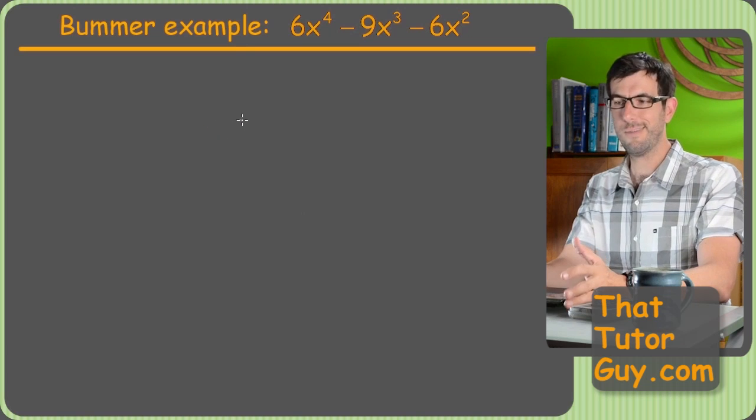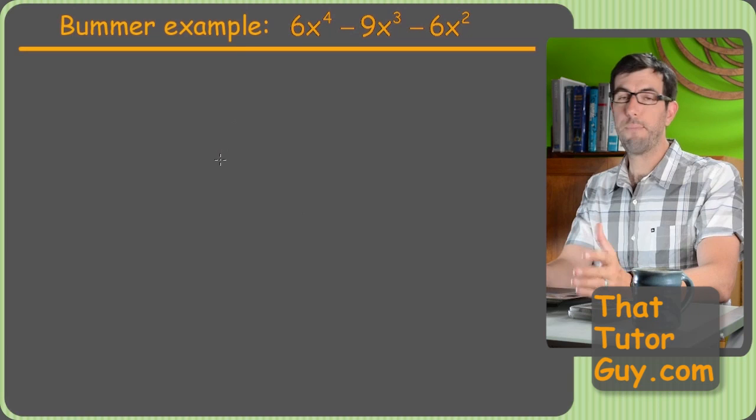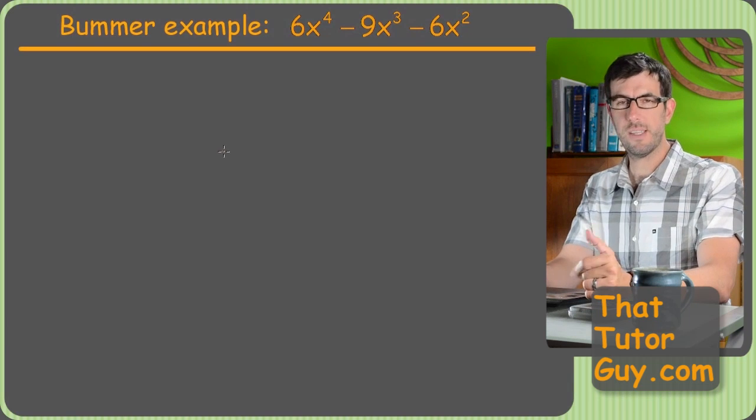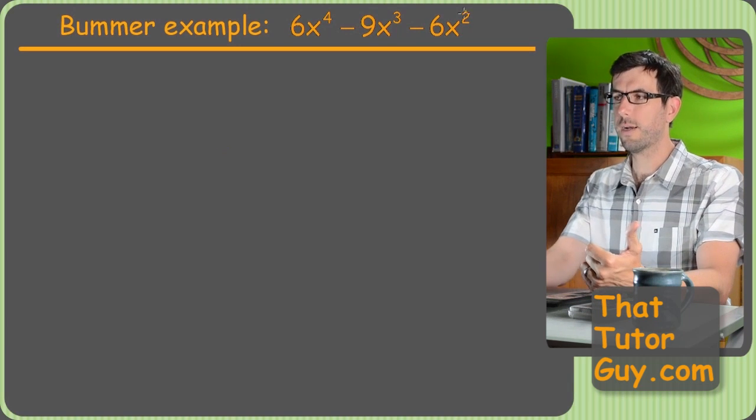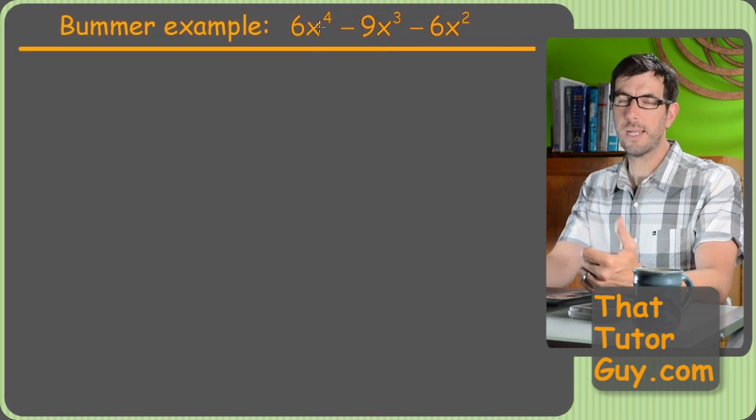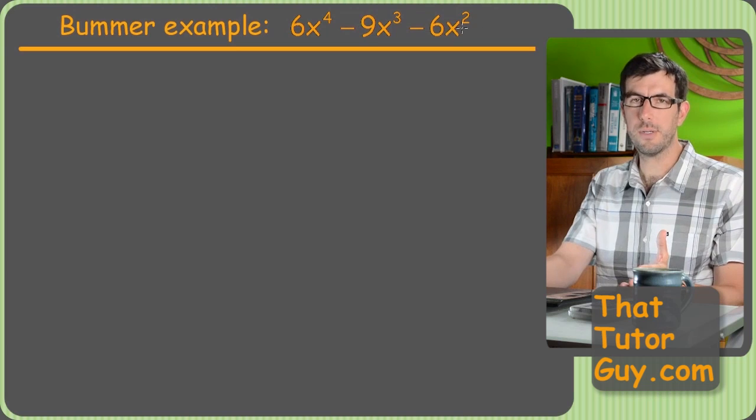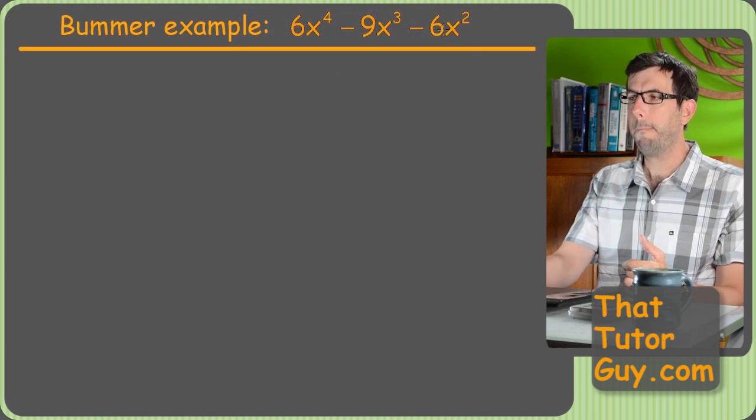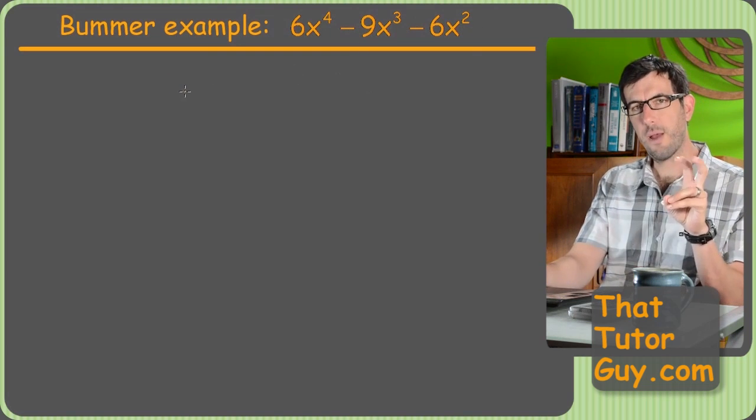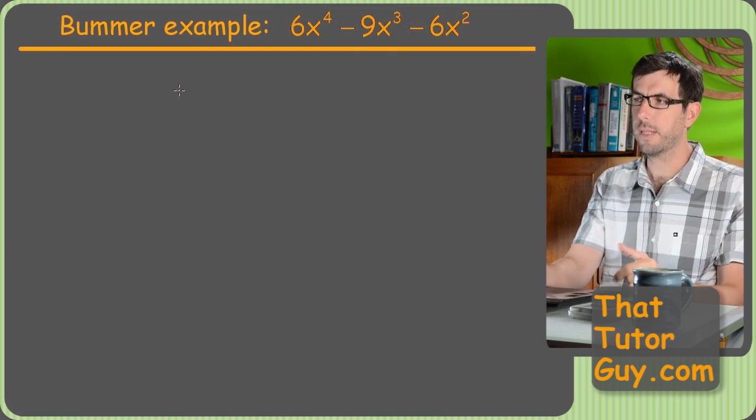Bummer example. Huh, what does that mean? Well, we've got big problems here, right? First of all, it doesn't have an x squared in it. It does have an x squared, but it also has these heinous higher powers of x, which are not typical factoring problems. It also has big ugly numbers, 6s and 9s and junk. But, you know, if I do that factor out thing first, that'll get me there. So let's give it a shot.